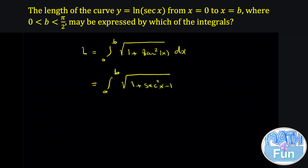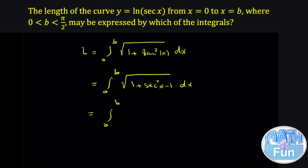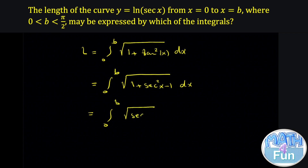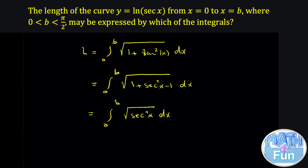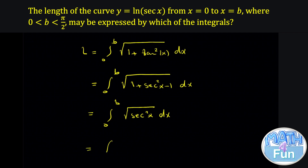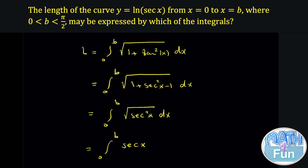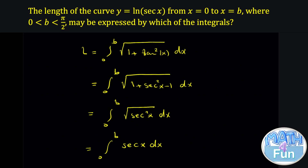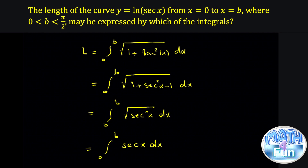Inside the radical we have dx, and after the plus 1 and minus 1 cancel, we are left with the integral from 0 to b of the square root of secant squared x dx. The square root of secant squared becomes secant x, so the length of the curve can be expressed by the integral from 0 to b of secant x dx.